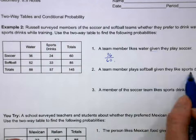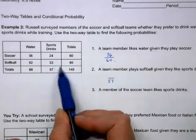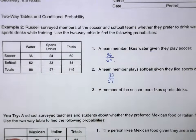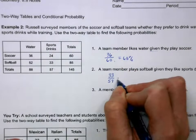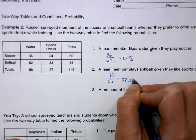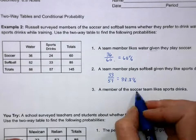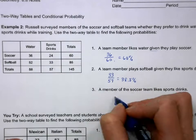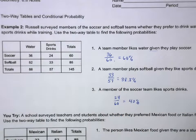Next: the probability of being a softball team member given they like sports drinks. There are 57 total who like sports drinks, and 33 of those are on the softball team — that is 40 percent. Also, the probability a soccer team member likes sports drinks: the given is being on the soccer team, and 24 of the 60 soccer players like sports drinks — also 40 percent. Now you try the next one.